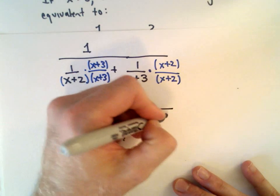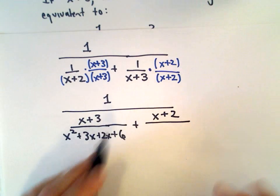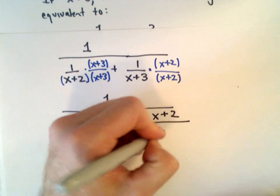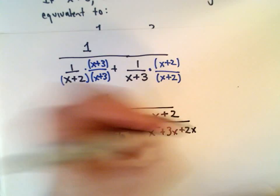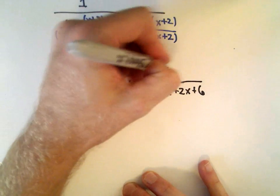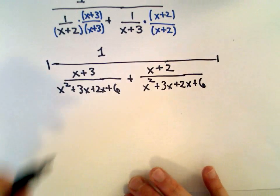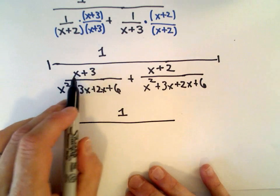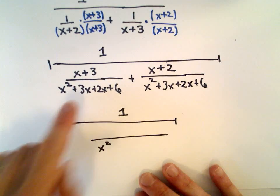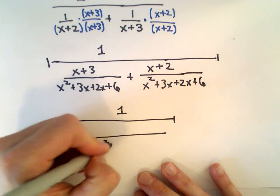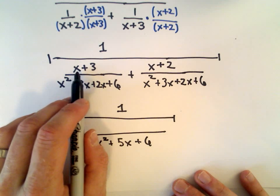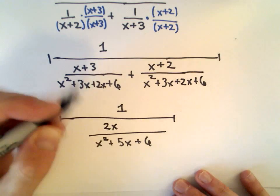For the second fraction, I have x+2 in the numerator. Same denominator: x² + 3x + 2x + 6. So we've got this common denominator now of x² + 5x + 6. In the numerator of the bottom fraction, we have x + x which is 2x, and 3 + 2 which is 5.